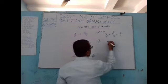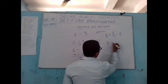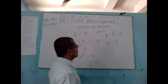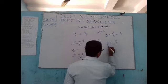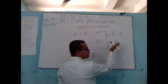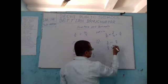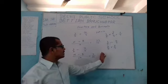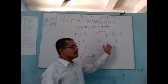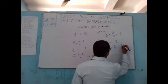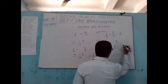To divide 3 by 2 by 4 by 5, change the division sign to multiplication and reverse the second fraction. So 4 by 5 becomes 5 by 4. Check if any number can be cancelled — none can — so multiply numerators together: 3 times 5 is 15, and denominators together: 2 times 4 is 8. The answer is 15 by 8.